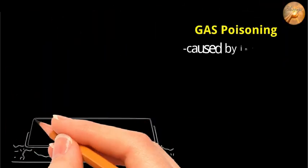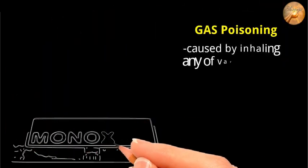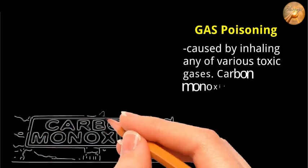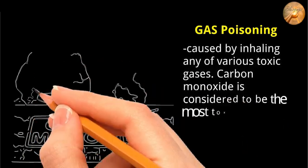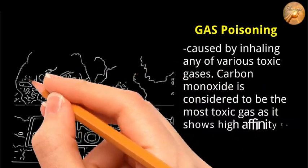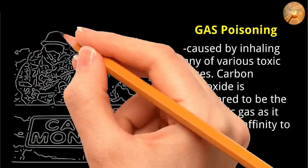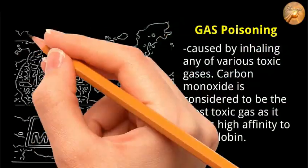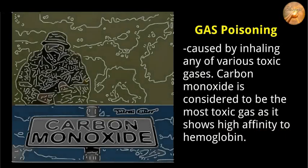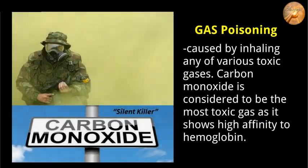Gas poisoning is caused by inhaling any of various toxic gases. Carbon monoxide is considered to be the most toxic gas as it shows high affinity to hemoglobin. It is also called the silent killer because it is colorless, odorless, tasteless, and non-irritating.